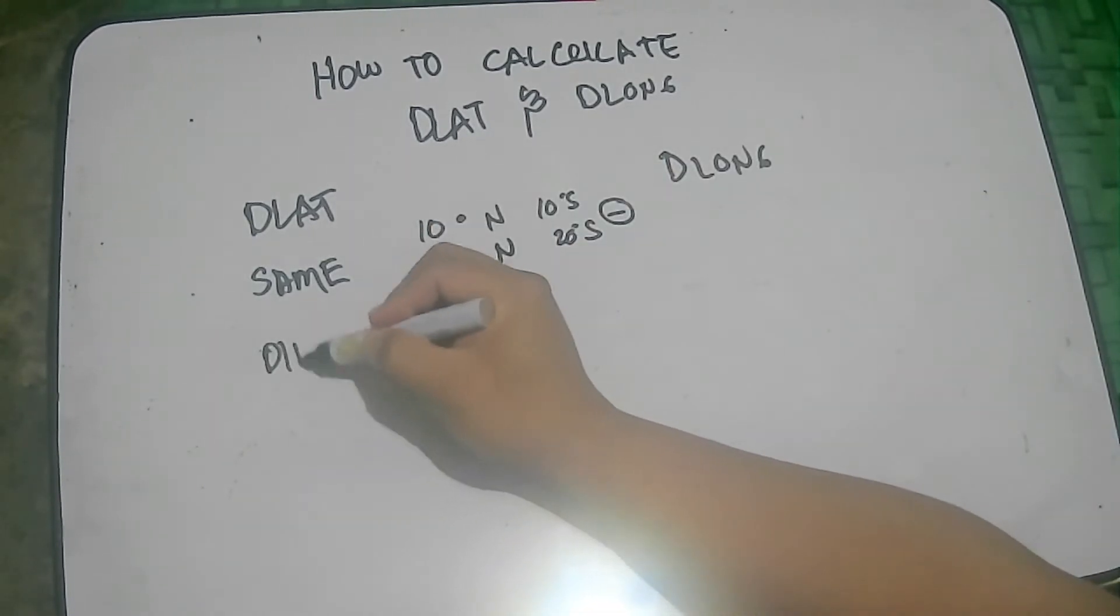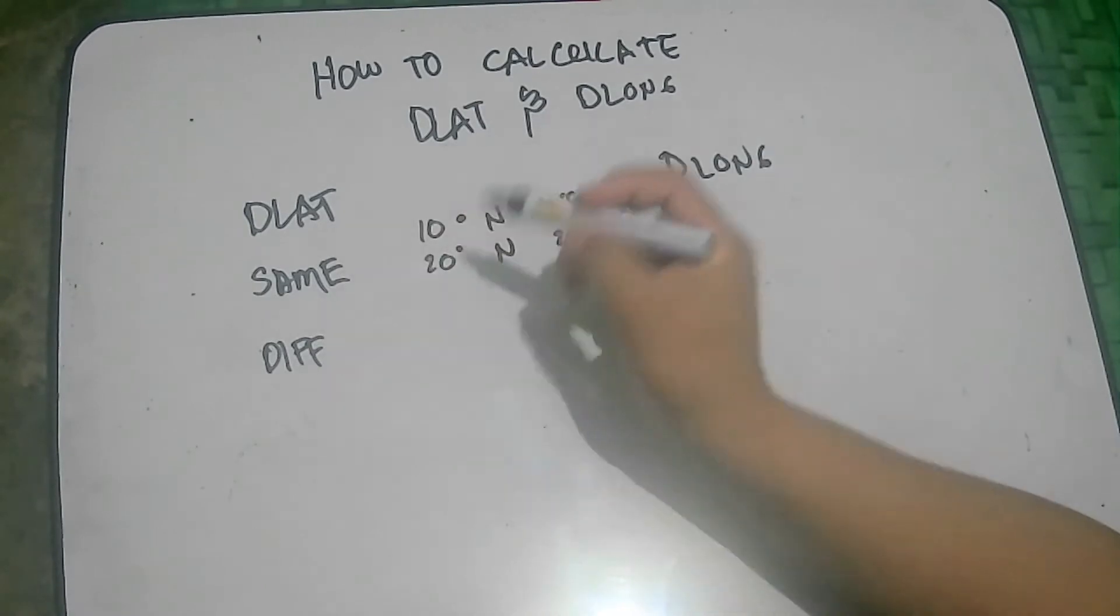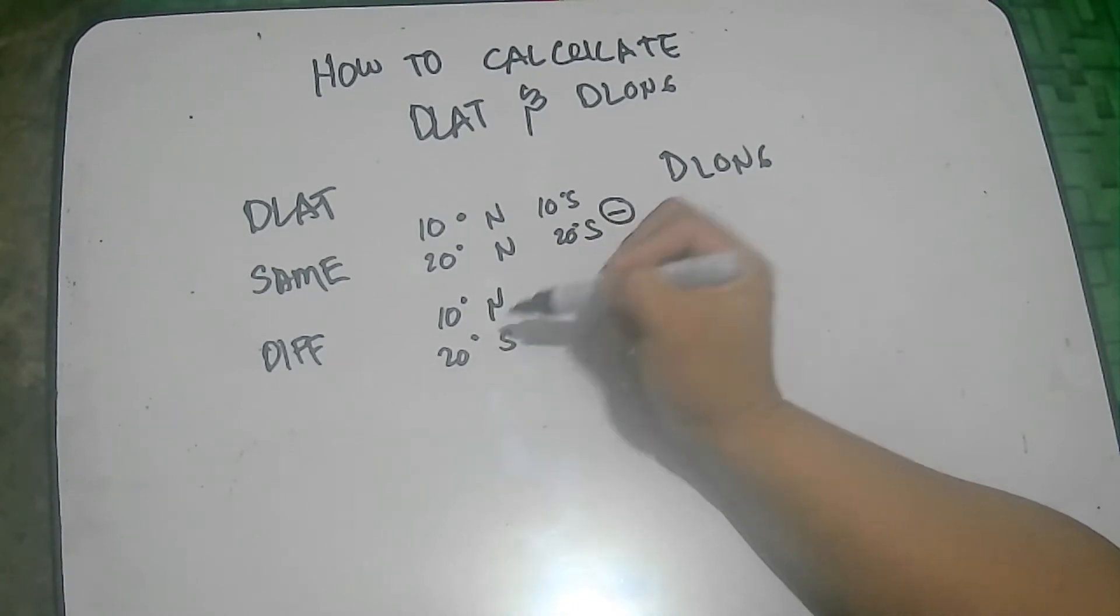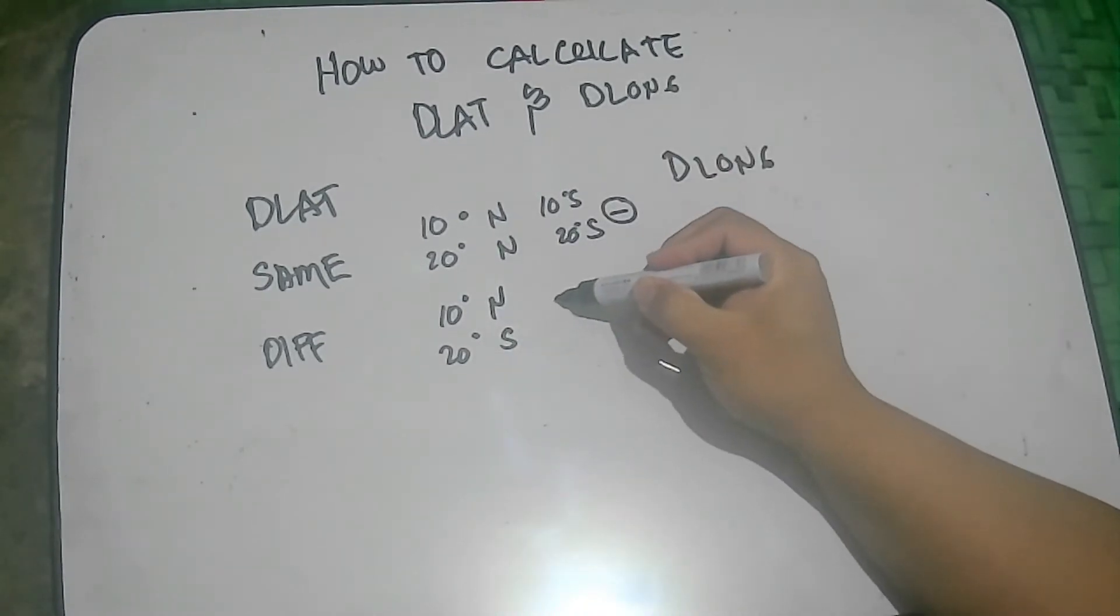Now, pagka different name naman siya, yung ating difference of latitude, for example, 10 degrees north and 20 degrees south, what we do is to add.